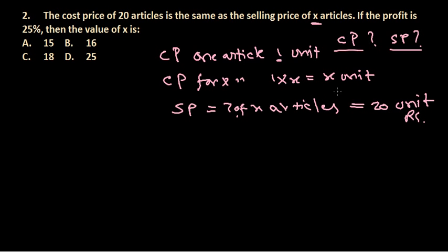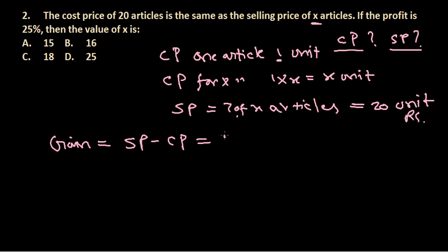So the cost price is X and the selling price is 20 rupees. The gain here is selling price minus cost price, which is 20 minus X. That gives us our net gain or net profit.